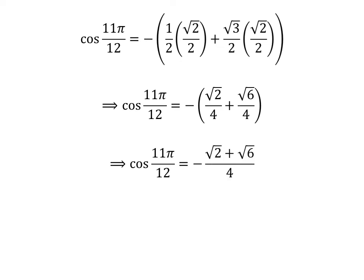As the denominator of both fractions in the above expression is the same, cosine of 11 times pi upon 12 is equal to minus of square root of 2 plus square root of 6 upon 4. Taking out the common factor square root of 2 in the numerator gives us cosine of 11 times pi upon 12 is equal to minus of square root of 2 times 1 plus square root of 3 upon 4.